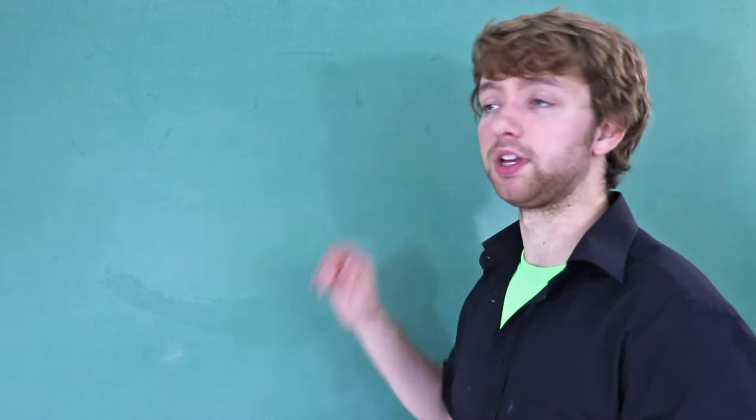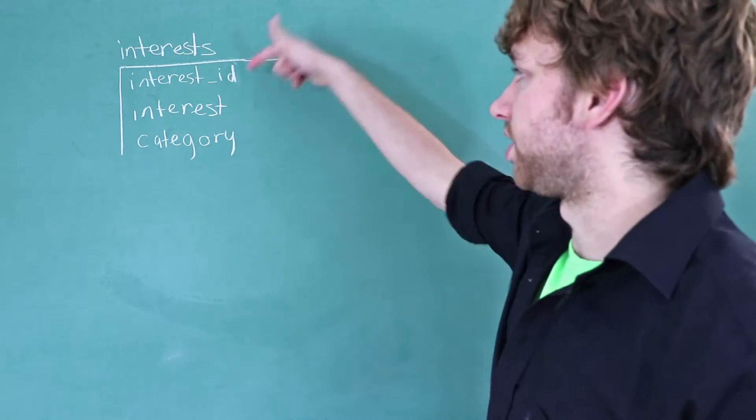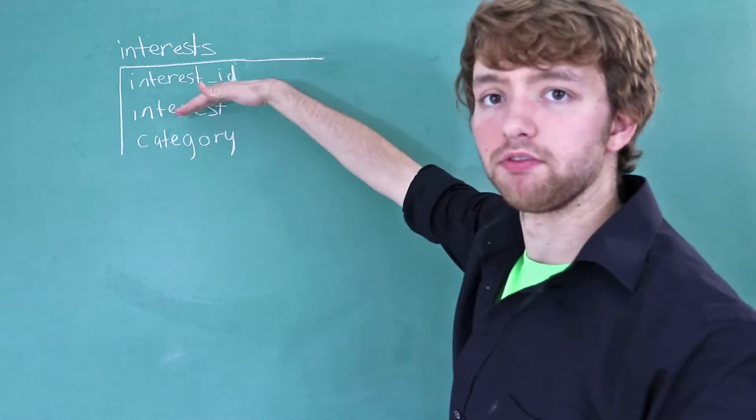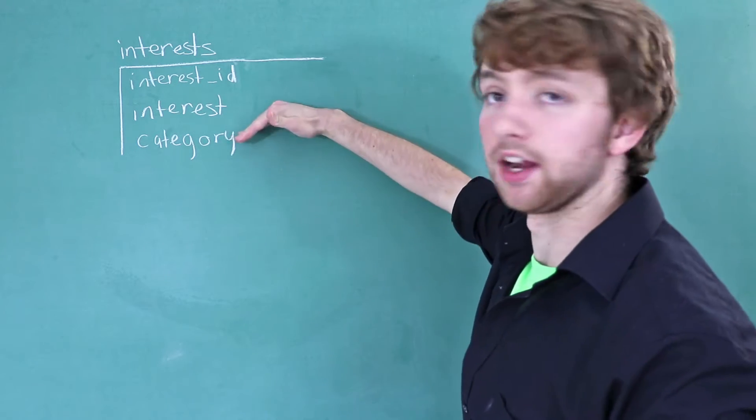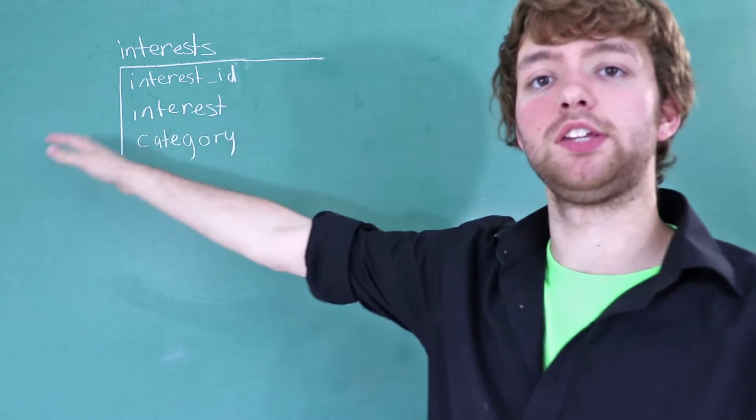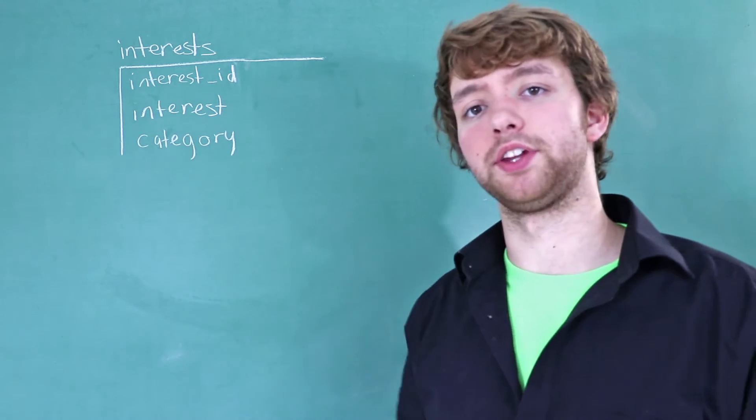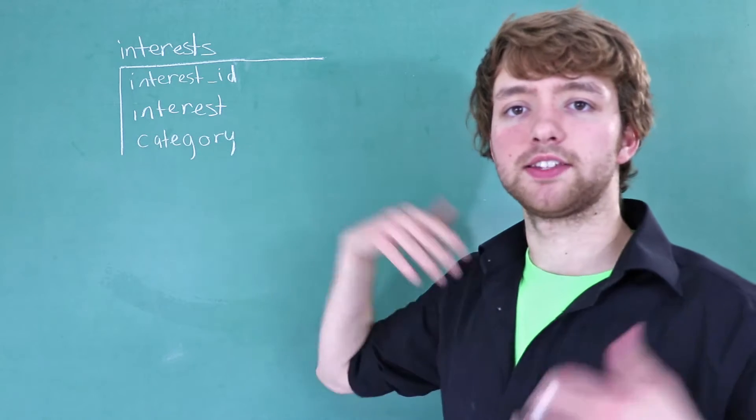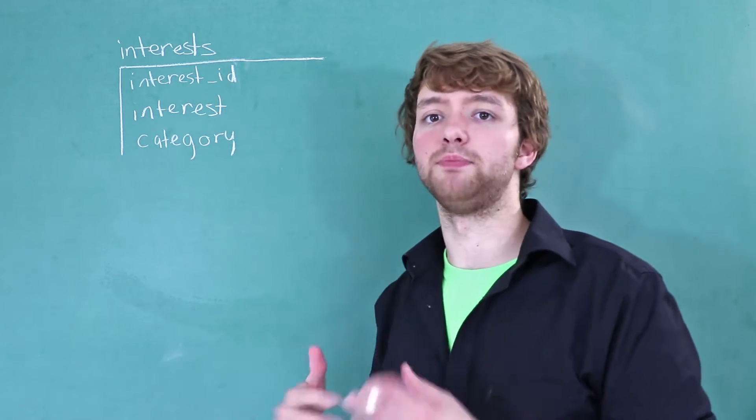What we have is an interest table that looks something like this. So we have three columns: the interest ID, the actual interest value, and then the category that the interest belongs to. Like I said in the previous video, this could be a foreign key to a category table if you want to set that up. For now, you can just leave it as a varchar, for example, and just type in your category.